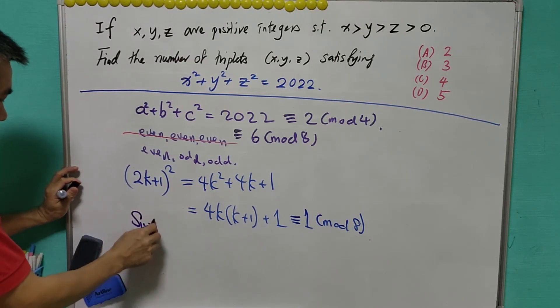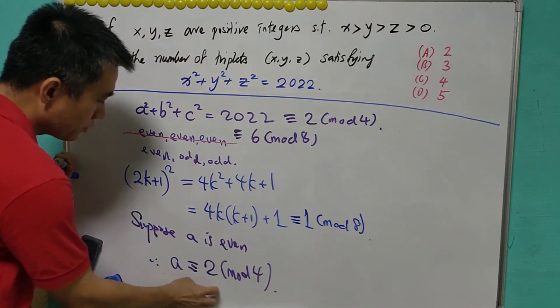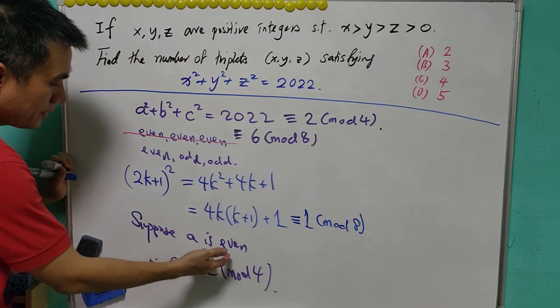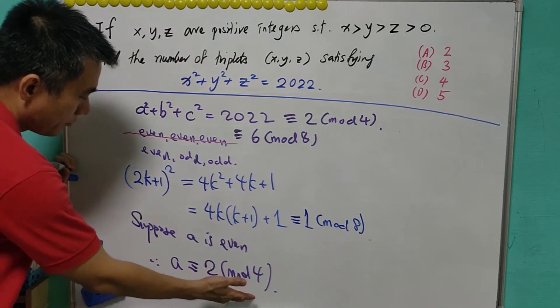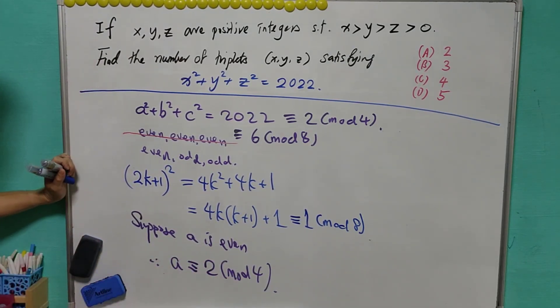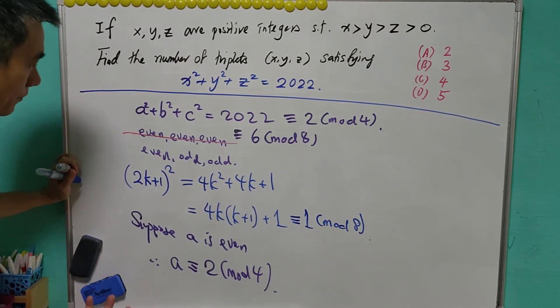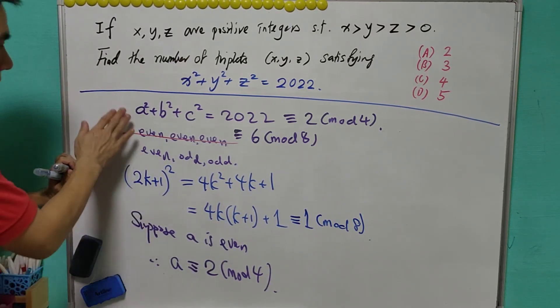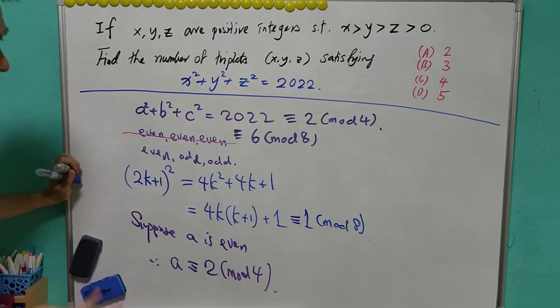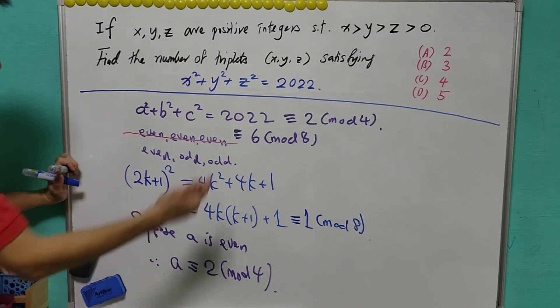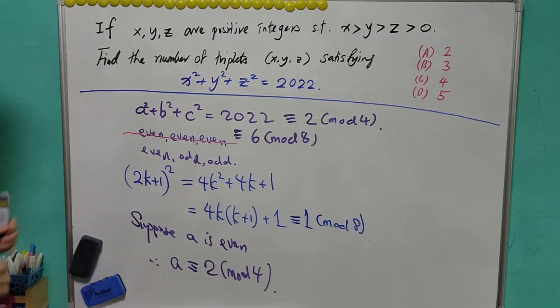Suppose a is even, then a is congruent to 2 mod 4. Since a is an even number, it's either 2 mod 4 or 0 mod 4. If a is 0 mod 4, meaning that a is a multiple of 4. If a is a multiple of 4, a square will be a multiple of 8. And this will give a contradiction. So therefore, a must be congruent to 2 mod 4.